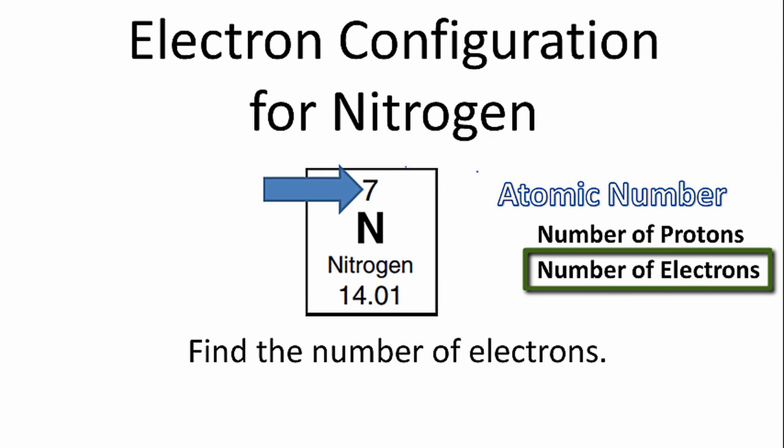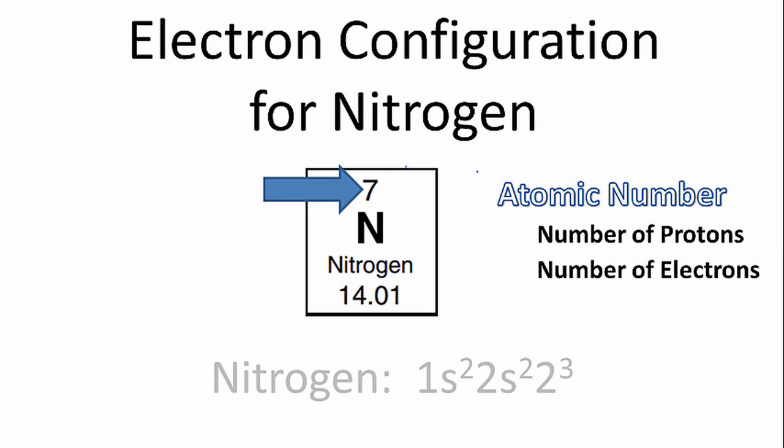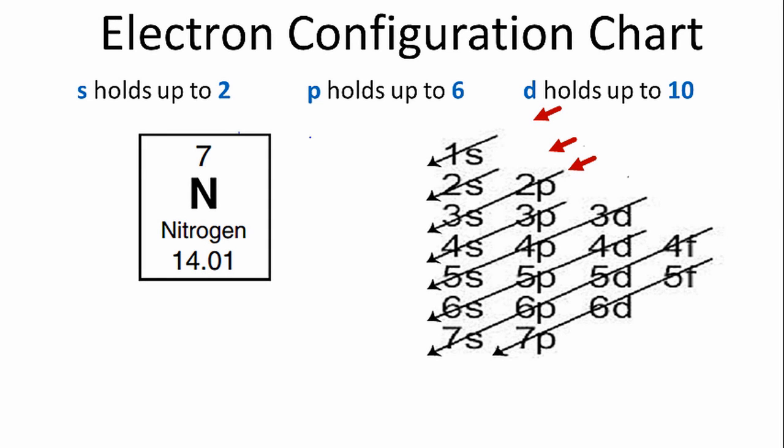Once we have the number of electrons, we can write the electron configuration for nitrogen. So let's try it. We have nitrogen, and it has seven electrons.